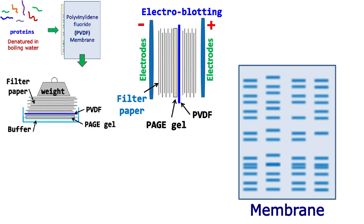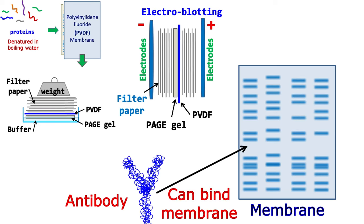The next step is to detect our desired protein using an antibody. However, an antibody can also bind the membrane. Hence, to avoid this non-specific binding, we need to block the membrane.